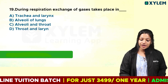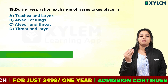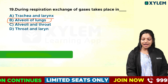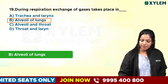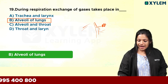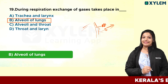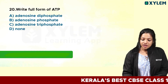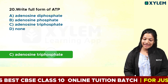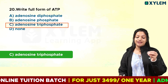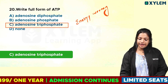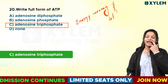Nineteenth question: during respiration, exchange of gases takes place in the alveoli of the lungs. In our lungs, we have alveoli, bronchioles, and branches like balloon sacks or grape-like volumes — these are used as gas exchangers. Next question: write the full form of ATP. Adenosine triphosphate. ATP means the energy currency of the cell.